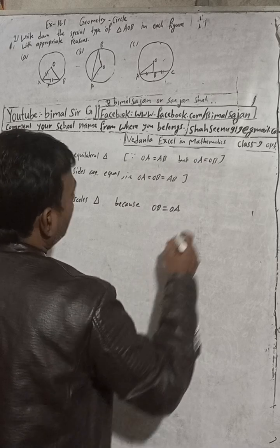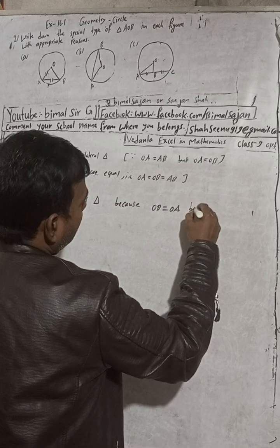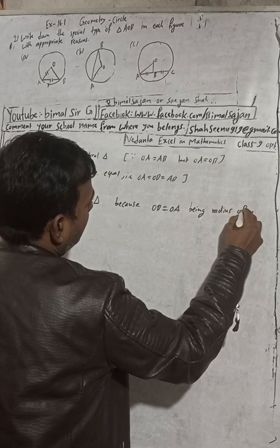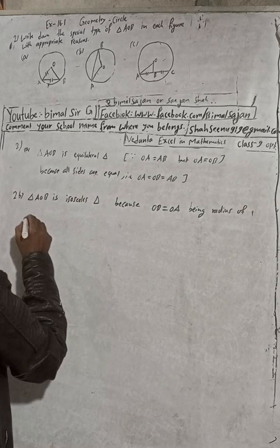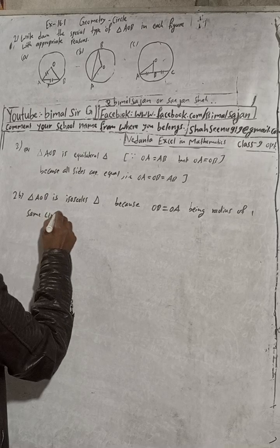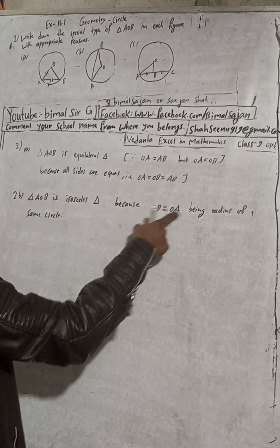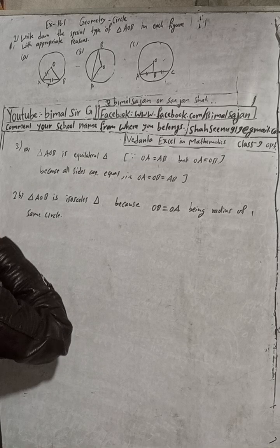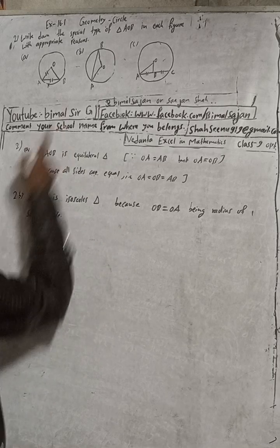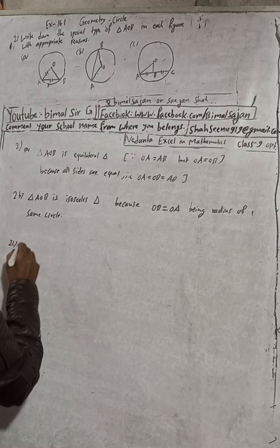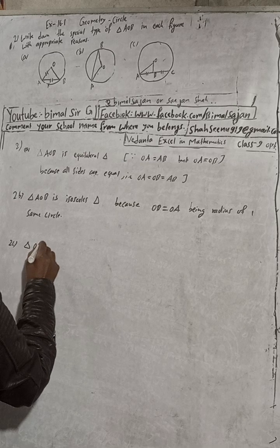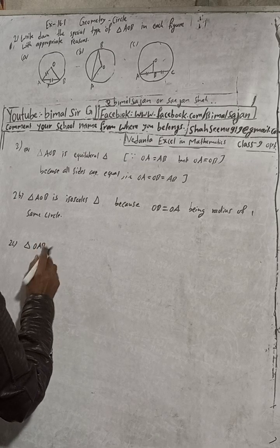Being radii of the same circle — that is the reason triangle AOB is isosceles. Now for 2c, triangle AOB is a right angle triangle.